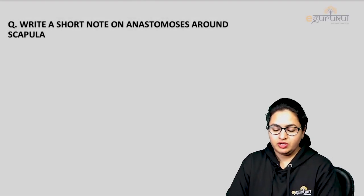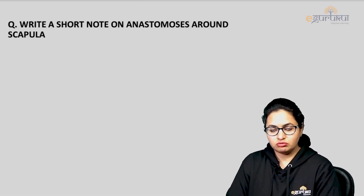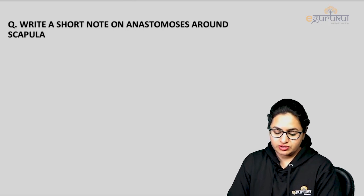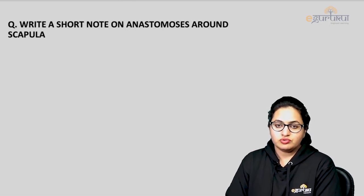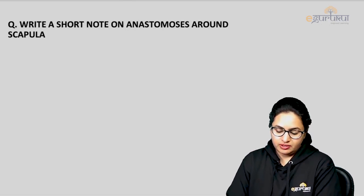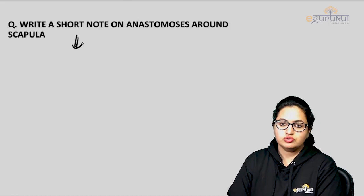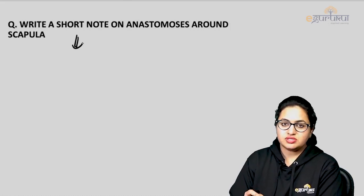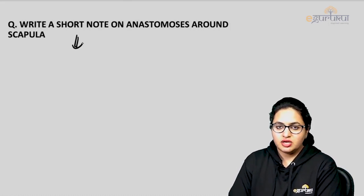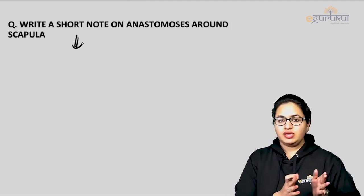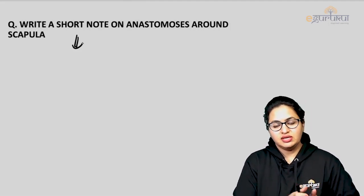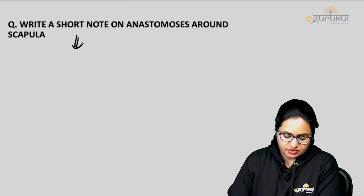Anastomosis around the scapula is a very important topic which can be asked as a short note as well as during the viva voce. The anastomosis around the scapula is between arteries which are branches of the first part of the subclavian artery and the third part of the axillary artery.